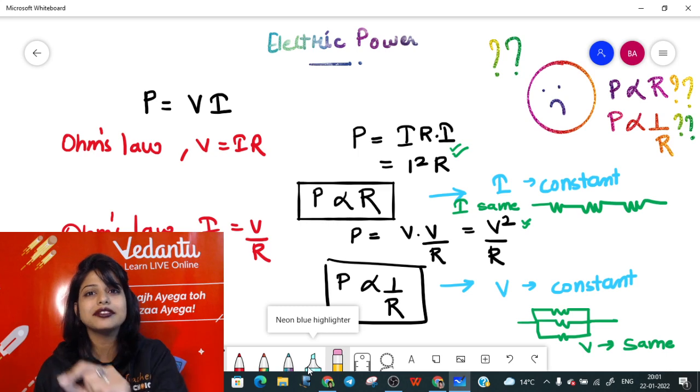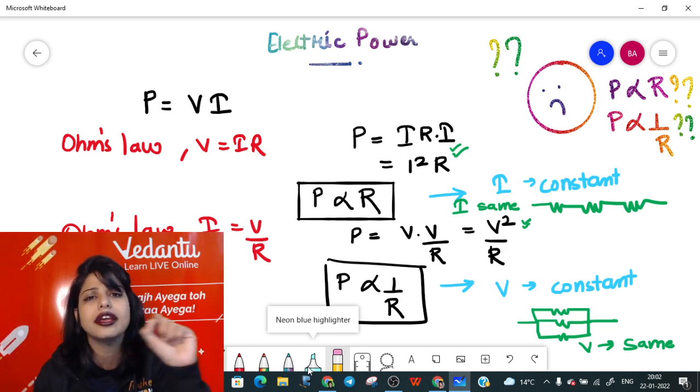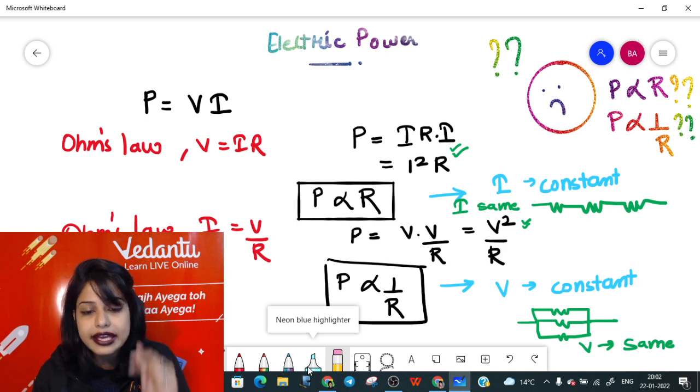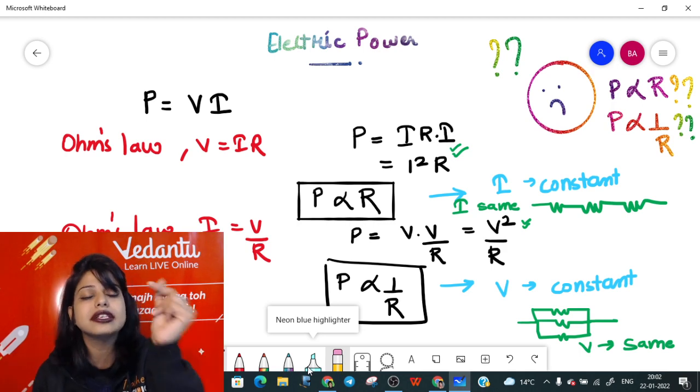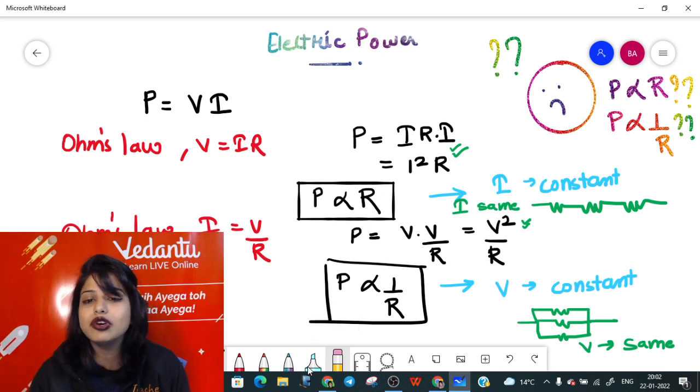So aaj ke baad, this confusion should not be there. What is the power equivalent or proportional to? Is it directly proportional to R? Yes, it is perfectly correct if the I is constant. Second, is it inversely proportional to R? That is also perfectly correct if my V is constant.